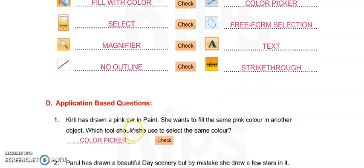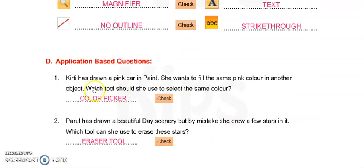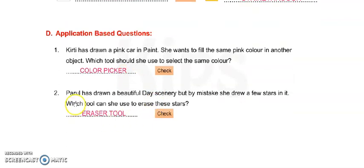Now Exercise D - Application based questions. Number one: Keerti has drawn a pink car in Paint. She wants to fill the same pink color in another object. Which tool should she use to select the same color? It is COLOR PICKER tool. Number two: Parul has drawn a beautiful day scenery but by mistake she drew a few stars in it. Which tool can she use to erase these stars? It is ERASER tool. With eraser tool we can erase any part of the picture.